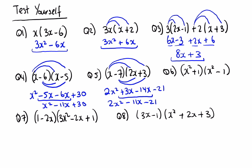Be careful in this one with different powers. We add the powers: x squared by x squared is 2 plus 2, giving x to the power of 4. Minus x squared by 1 is minus x squared. Plus x squared by plus 1 is plus x squared. And we have minus 1. The minus x squared and plus x squared cancel out, so we're just left with x to the power of 4 minus 1.